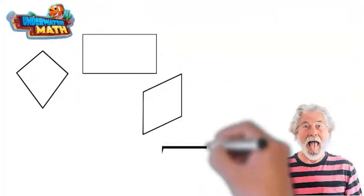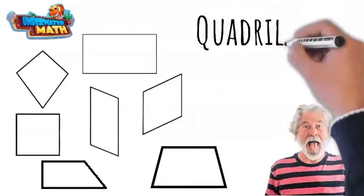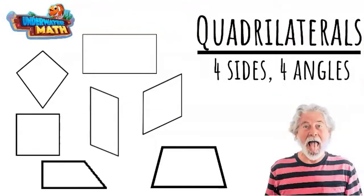Next, these four-sided hooligans are called quadrilaterals. I have a lot to say about these fellas, so we'll come back to them later.